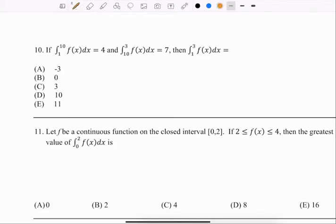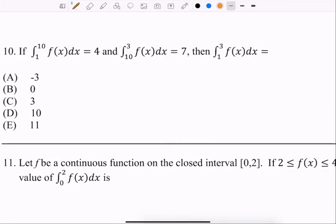Number 10, for this one it says from 1 to 10 we get 4, and then from 10 to 3, which is backwards right? 10 to 3, that's going from right to left on the number line.